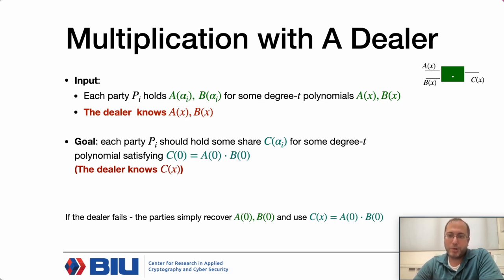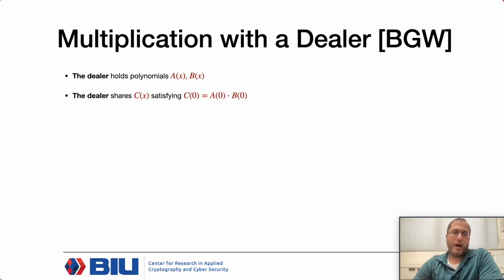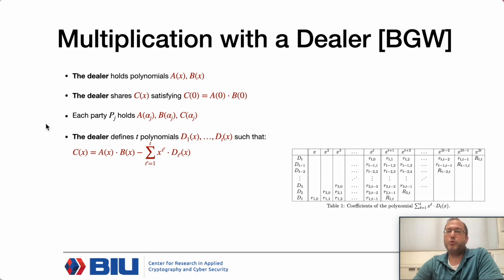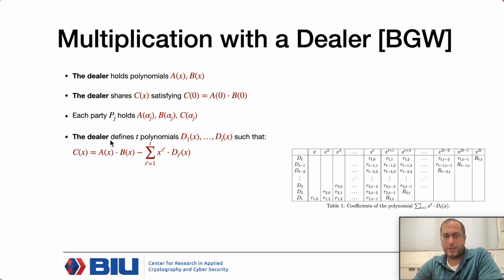Let's look at how BGW implements this functionality. The dealer holds two polynomials A and B, and the goal is to share a polynomial C whose constant term is the product of the constant terms of A and B. The dealer chooses such a polynomial C(x) and shares it using verifiable secret sharing. Each party then holds one share on A, one on B, and one on C. The dealer wants to prove this relationship holds, and to do so it defines t additional polynomials d_1 to d_t satisfying the equation. The polynomial A times B has degree 2t, and these t polynomials serve to remove the t leading coefficients. This requires n VSSs in total.